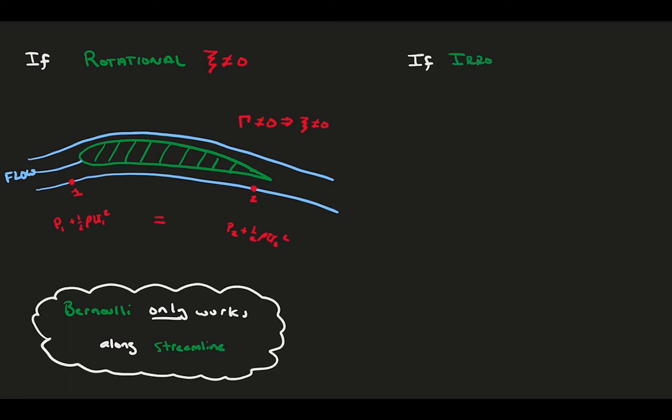However, if we can say flow is irrotational, like a slow flow through a converging duct, then we can apply Bernoulli at any two points along the flow, and we don't have to worry about staying on the same streamline.